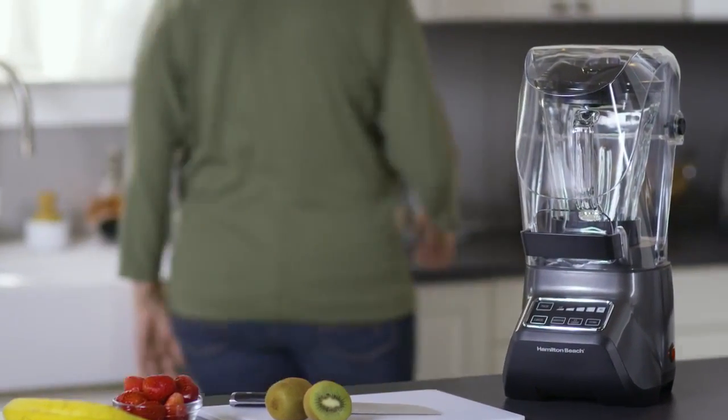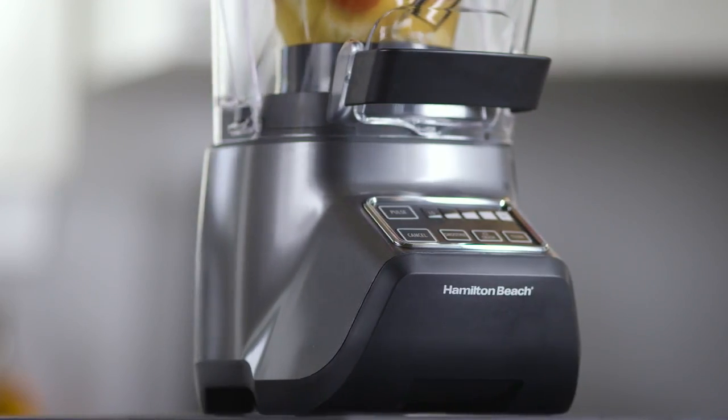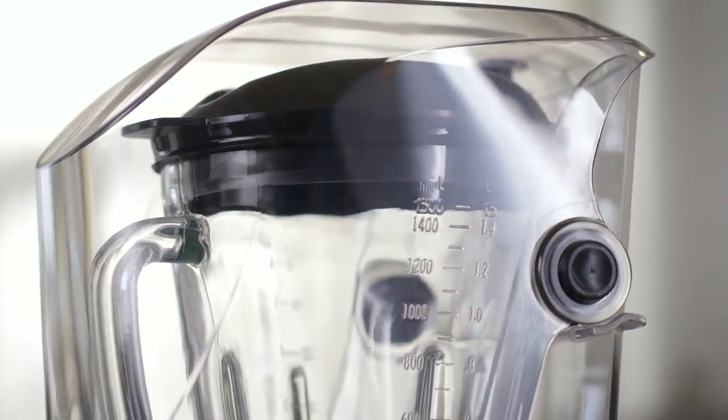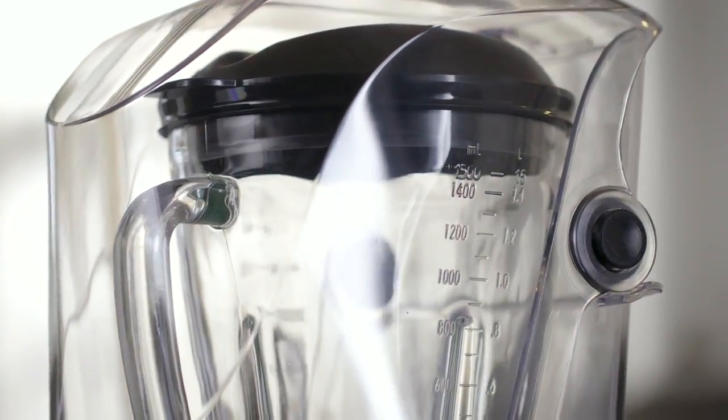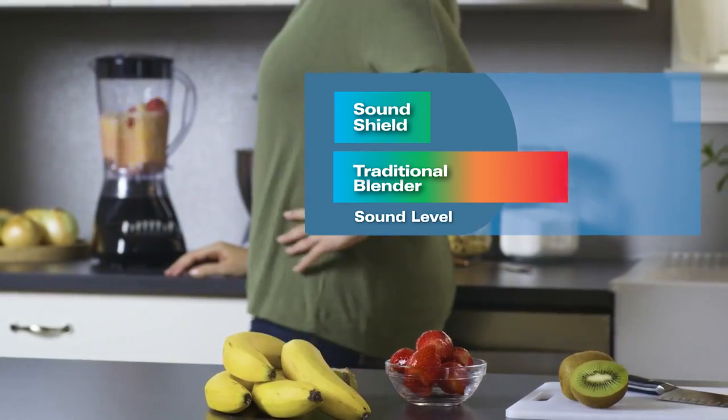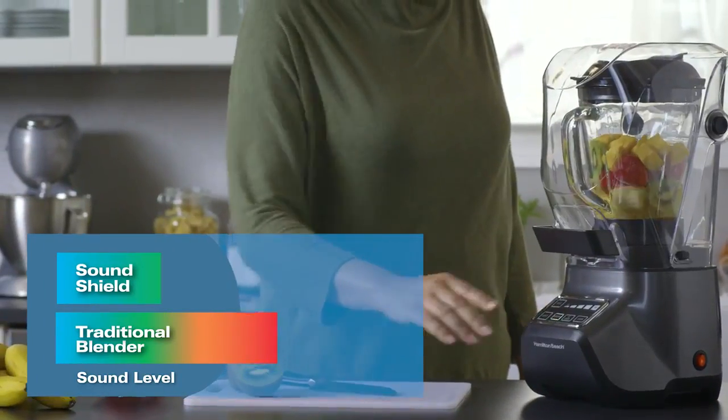The new Hamilton Beach SoundShield 950 Blender with Quiet Blend Technology is 55% quieter than a traditional blender. Here's a traditional blender and here's the SoundShield 950 in action.